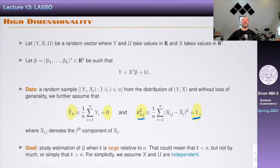Depending on the field, high dimensionality will be more or less relevant. Today we're going to assume we are in a situation where K is large. Once K is large there are problems — think about the genes-and-flowers case, where there are far more genes than sample size. OLS is not even well-defined because you have more covariates than observations: the X'X matrix doesn't have full rank and the estimator is not unique.